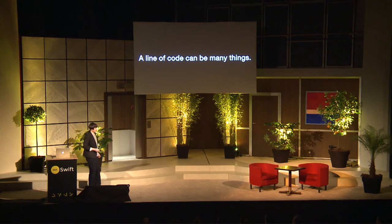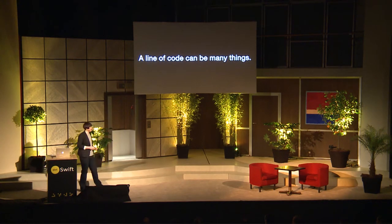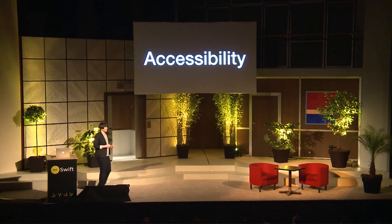A line of code can be many things. It can be a brand new feature, an amazing algorithm, or a horrible security bug — but hopefully not. It can also open whole new worlds for people. I'll be talking about accessibility, though I won't actually be talking about the accessibility APIs, and there will be a bit where I'm talking about how to make things less accessible. But in the end, I'll get back to making it actually accessible.